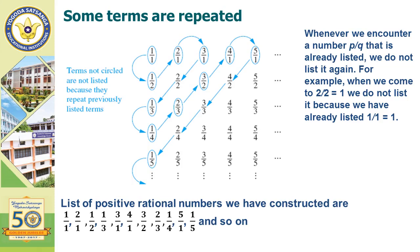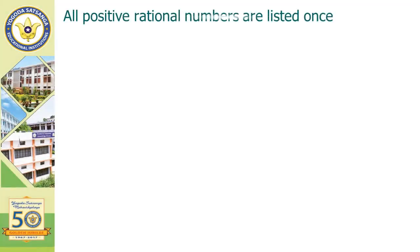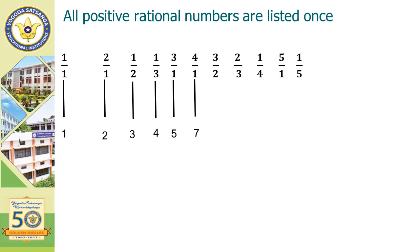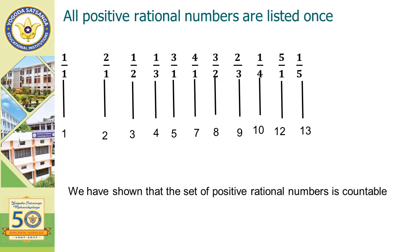So the final list of rational numbers is as follows: 1/1, 2/1, 1/2, 1/3, 3/1, 4/1, 3/2, 2/3, 1/4, 5/1, 1/5, and so on. The circled numbers are listed and the uncircled numbers are not listed. All positive rational numbers are listed once. The first number 1/1 is assigned natural number 1, the second gets 2, the third gets 3, and so on. In this way, we have shown that the set of positive rational numbers is countable.